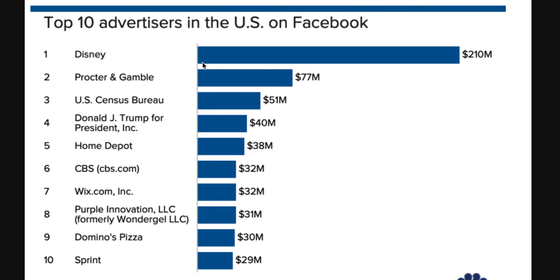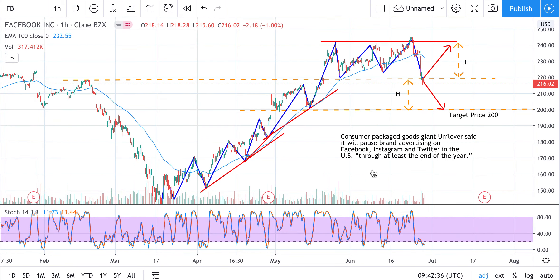Just for your information, you can see the top 10 advertisers in the US on Facebook. There is Disney, Procter & Gamble, and something very interesting — Donald J. Trump for President is somehow the fourth largest. That's why Facebook was always treating Trump's posts in a different way from Twitter. Perhaps this is the reason behind it. But anyway, this is my understanding — this is more of a political topic.